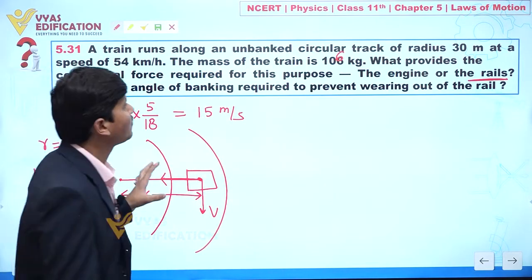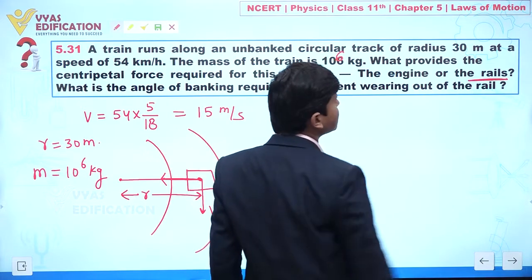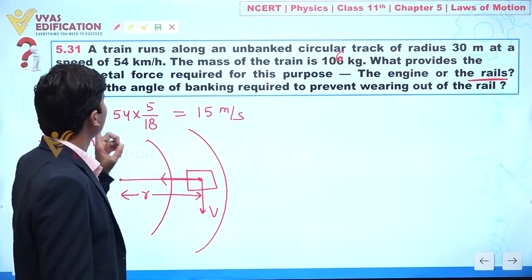If we talk about the ground reference, I can see the centripetal force is acting towards the center along the radius. So the first answer is clear to you: the rails are providing the necessary centripetal force.